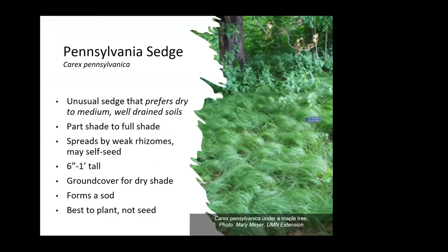Pennsylvania sedge is like a no-mow lawn and is one of the few sedges that can take dry soil. It does like well-drained soil and prefers part shade to full shade. It has weak rhizomes so it'll spread some but it's not a super strong spreader, and it may self-seed a little bit. It's a very attractive sedge and a good ground cover for dry shade — it forms a sod. It's hard to get started from seed, so you need to buy plants and put them in. It is also deer resistant and works really well under a black walnut.